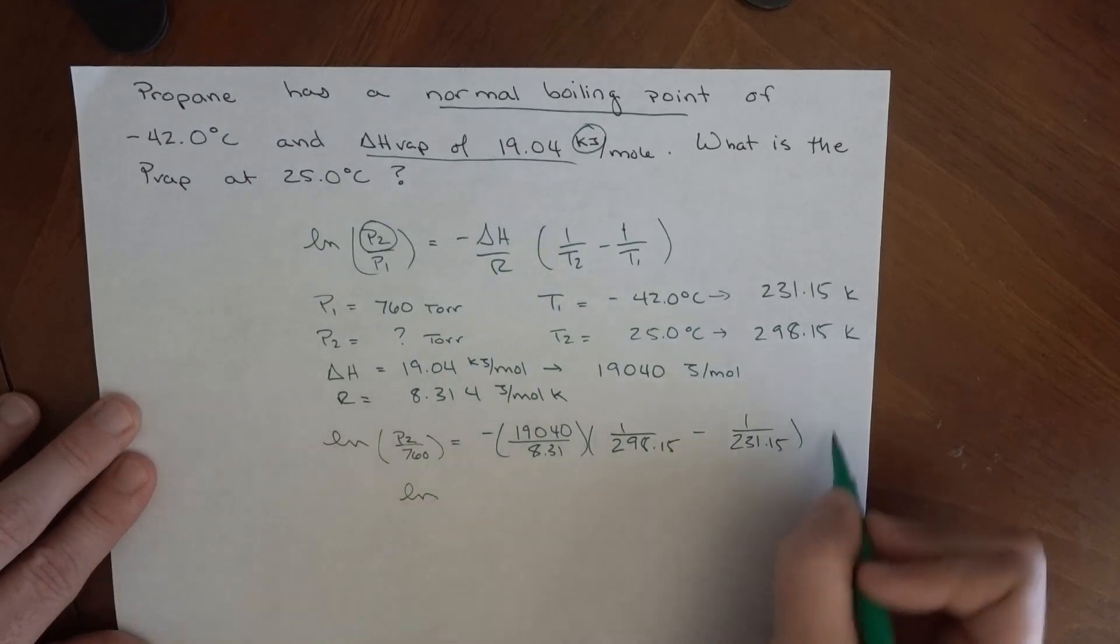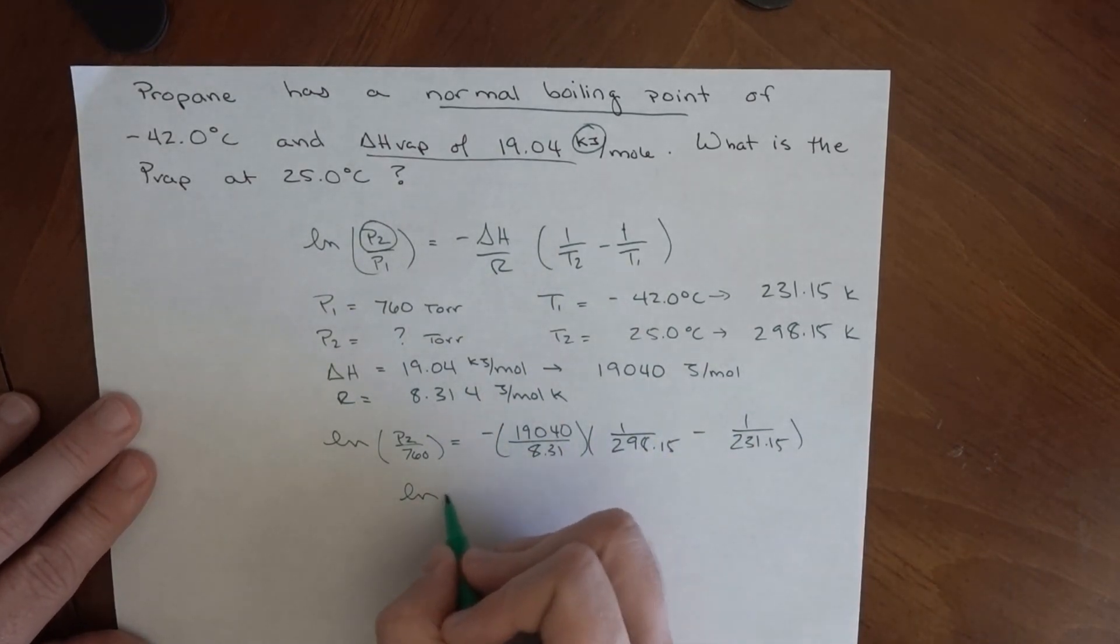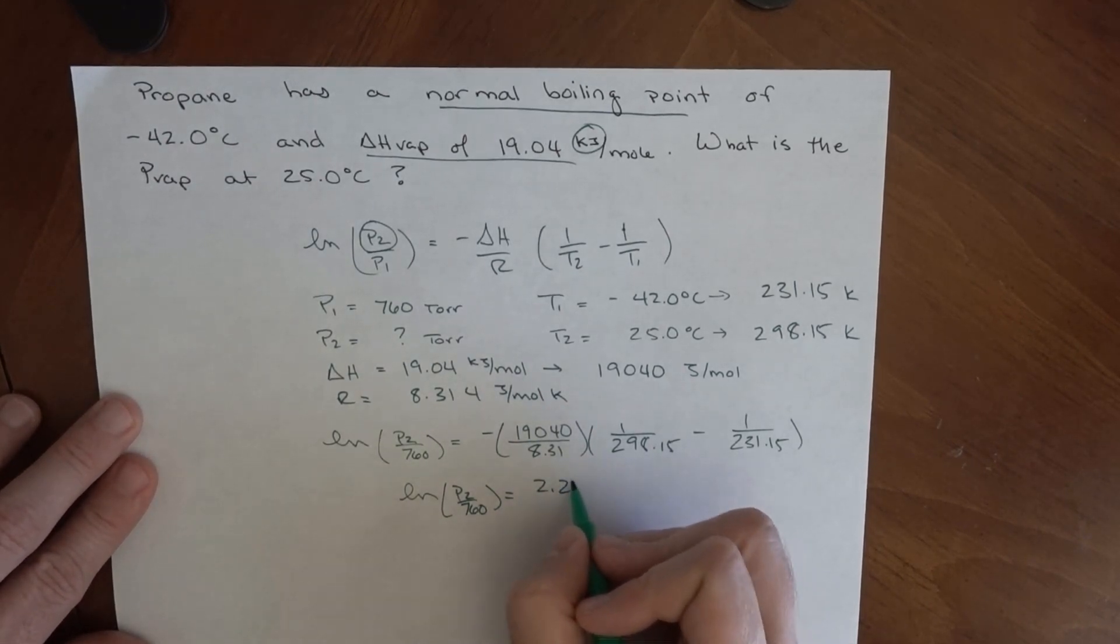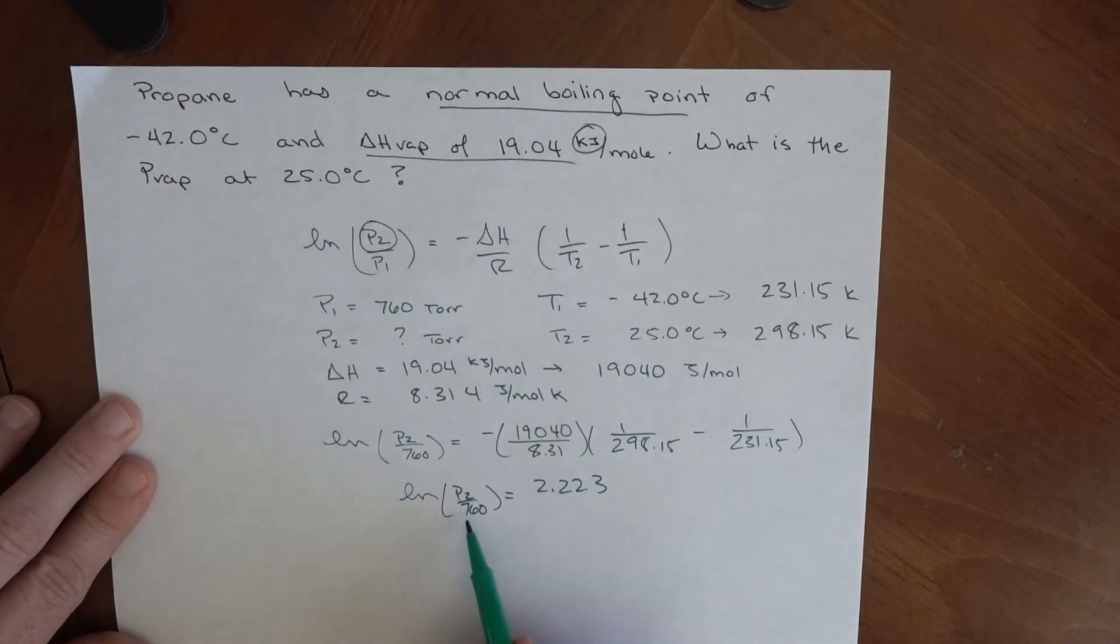These are just numbers, so we can do the math on this side. ln(P2/760) = 2.223. Now, because this is a logarithm, we don't just get to multiply both sides by 760 and arrive at an answer. We have to do something about this logarithm.